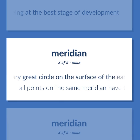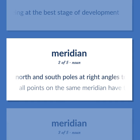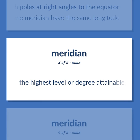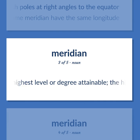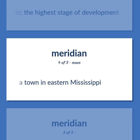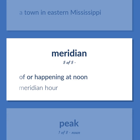Meridian. An imaginary great circle on the surface of the Earth, passing through the north and south poles at right angles to the equator. Example: All points on the same meridian have the same longitude. The highest level or degree attainable; the highest stage of development. A town in eastern Mississippi. Of or happening at noon. Example: Meridian hour.